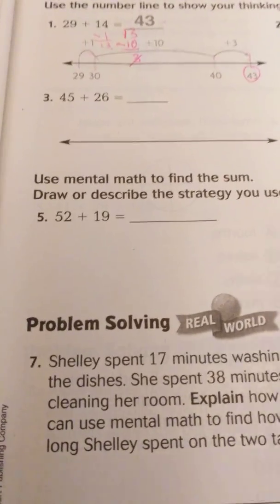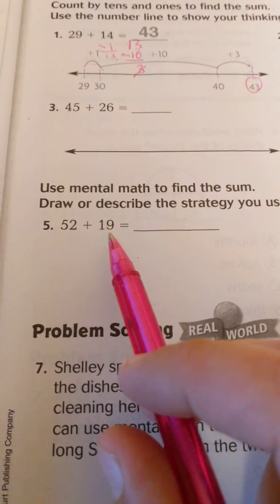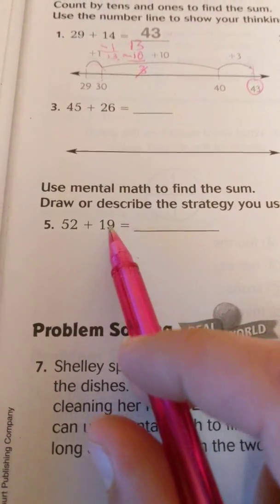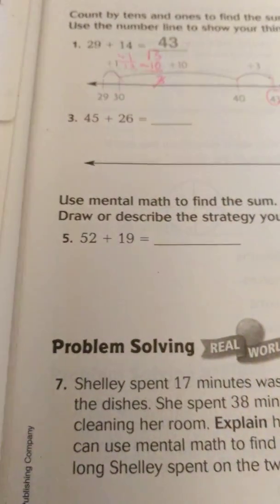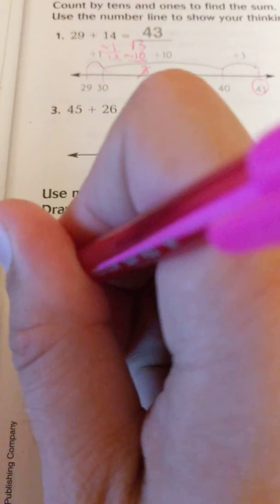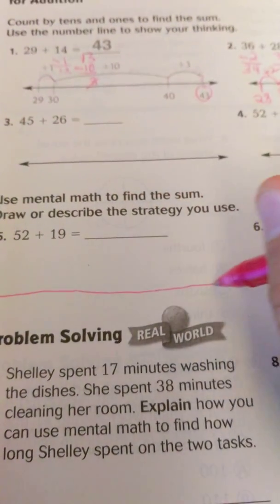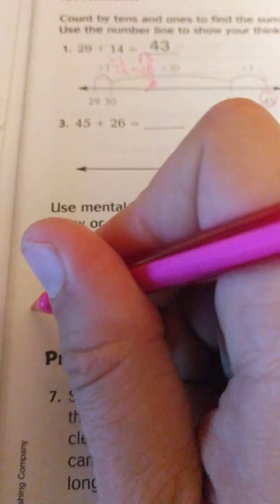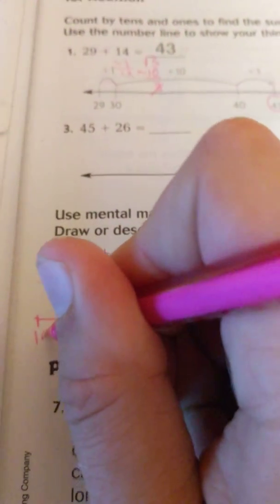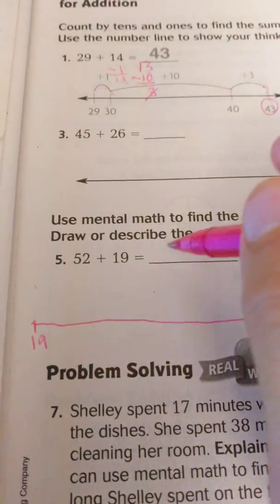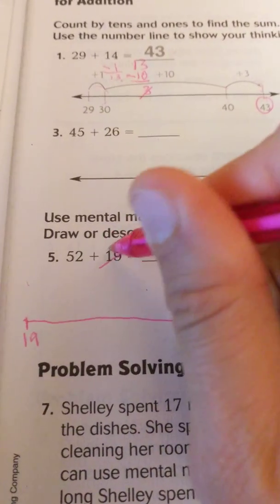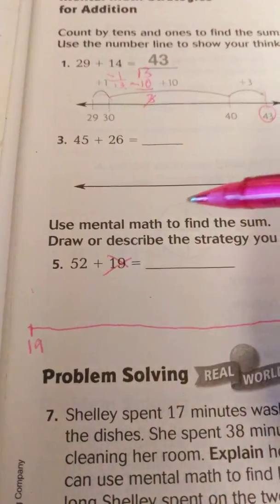So again, we have 52 plus 19. I could use either one of these numbers, but again, I like the number that's closest to the compatible number to use that. So 19 would be that number because it's really close to 20. So I'll just draw a line down here, just like they did up there, except more crooked. Start with 19. And then I'm going to start adding 52 to it. So I like to cross out my numbers so I know I'm not using them anymore. So I'm just done with 19.